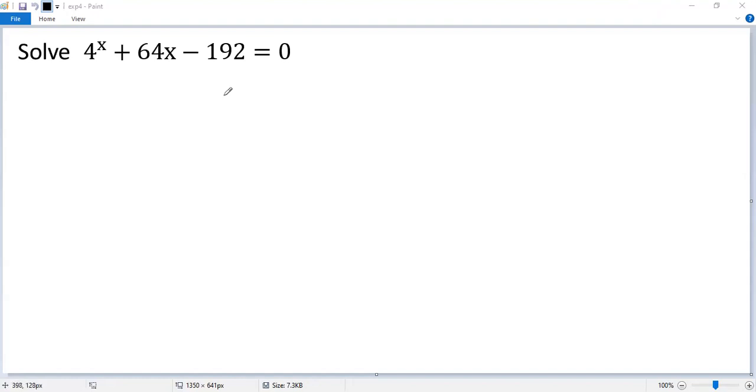To solve a nice exponential equation, let's move the last two terms to the right side. So we get 4 to the power x equals 192 minus 64 times x.